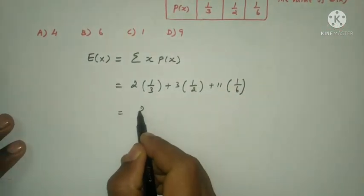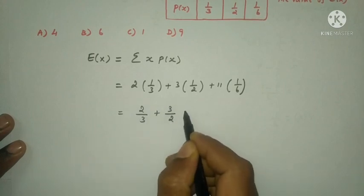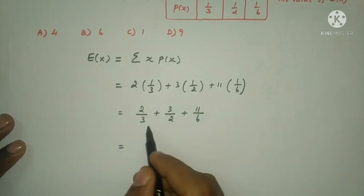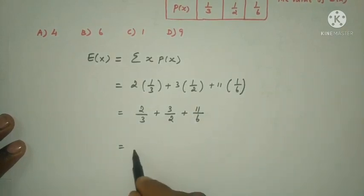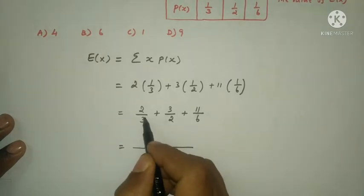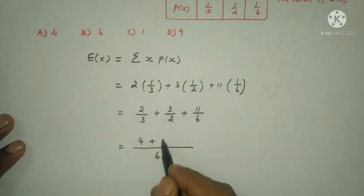That is equal to 2 by 3, plus 3 by 2, plus 11 by 6. Taking LCM as 6, we have 4 plus 9 plus 11.